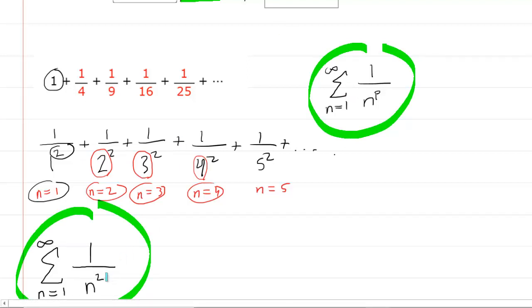Ask yourself, what is the value of p in this case? We can see that this number right here coincides with the value of p in the general form. In other words, this is a p-series with p equal to 2.